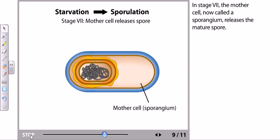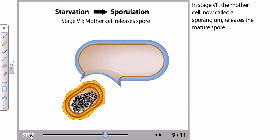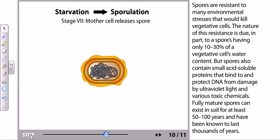In stage 7, the mother cell, also called sporangium, releases the mature spore into the environment. Spores are resistant to many environmental stresses that would kill the vegetative cell. The nature of the resistance is due in part to spores having only 10 to 30 percent of the vegetative cell's water content.